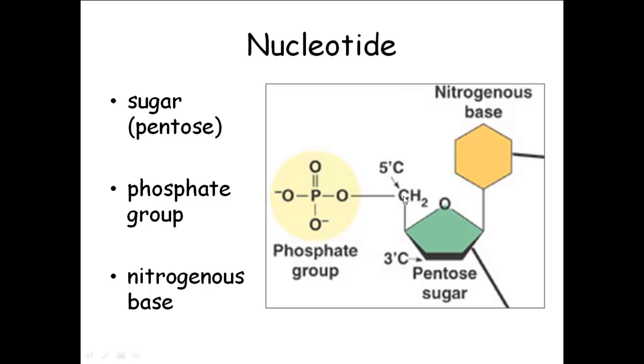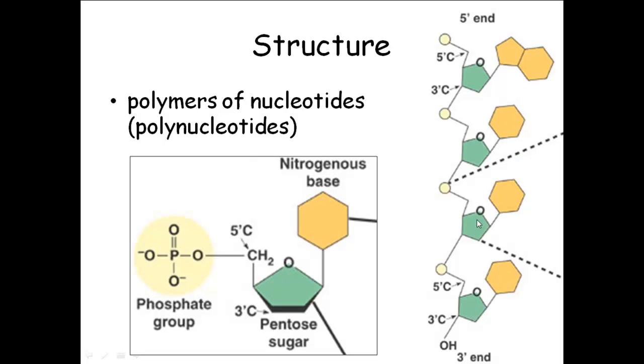On one end, on the fifth carbon, you have a phosphate group. On the first carbon, you have what's called a nitrogenous base. So if you take a nitrogenous base, a pentose sugar, and a phosphate group, that whole thing is a nucleotide. You put a bunch of those nucleotides together and you have nucleic acids, either DNA or RNA.